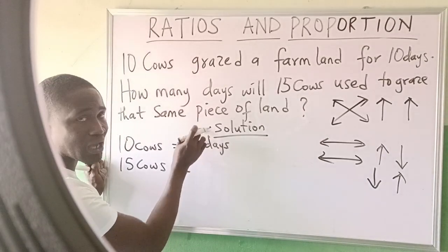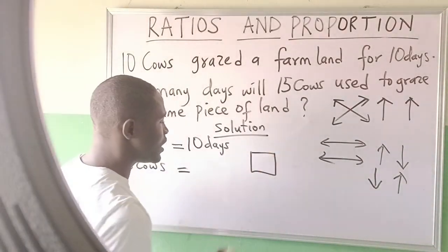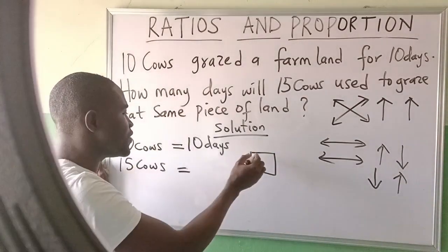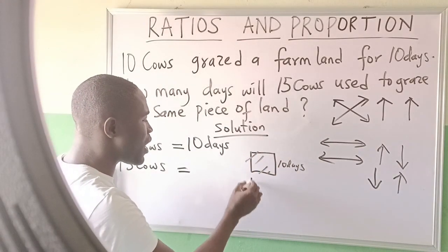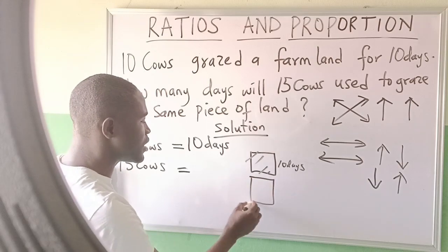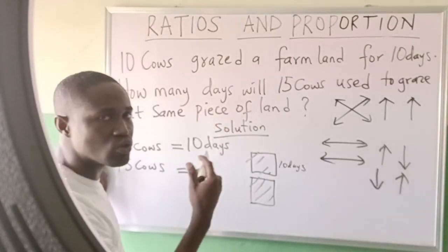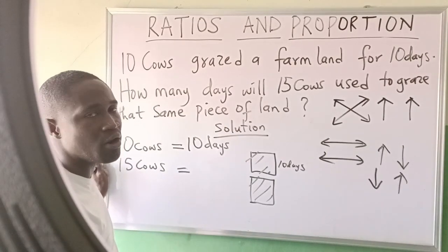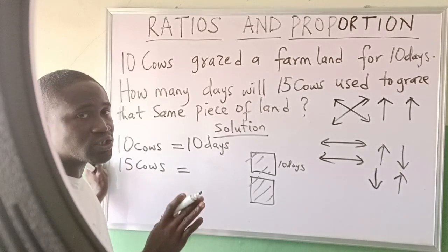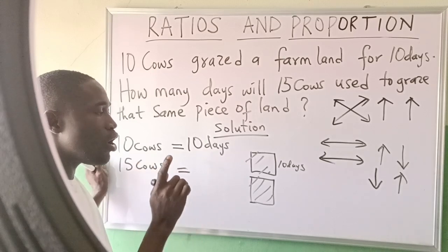Now I ask myself: if this is the land and the cows finish it in 10 days, when the number of cows increases, how many days will they use — a higher number of days to graze it, or will they use a smaller number of days? The logic you are using to solve it is on the condition that everything is constant.